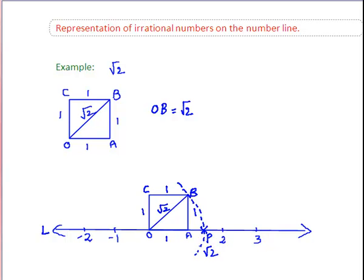Now, to locate another irrational number root 3 on this real line, draw a perpendicular, which is a unit perpendicular BD, to OB.